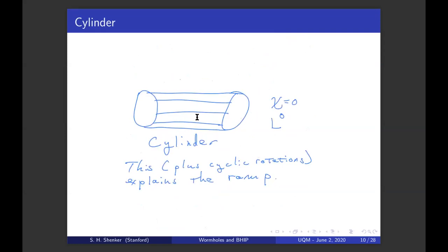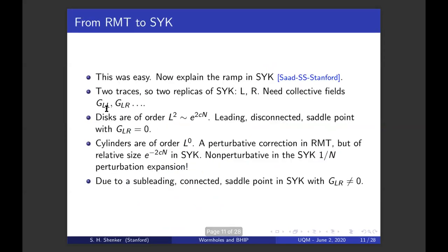But there are other diagrams that connect the two sides, these two traces. Here's the simplest one, a cylinder. And this, roughly speaking, plus cyclic permutations of this, where you rotate one circle with respect to the other, explains the ramp. This is a cylinder has Euler character zero. This diagram is order L to zero of order one, exponentially smaller than the slope part. All right, this was easy. It's been known for many years.